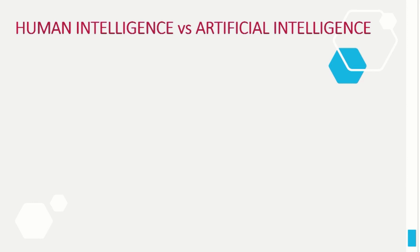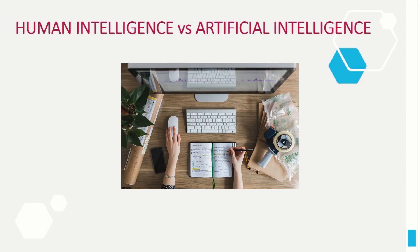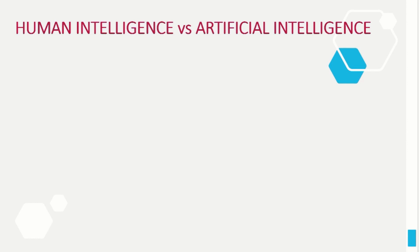Humans, on the other hand, can multi-task. While playing a game we can simultaneously listen to music. But artificial intelligence machines can only do those tasks that they are programmed for.